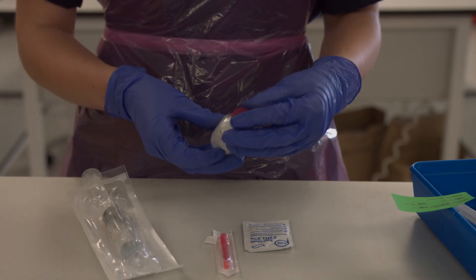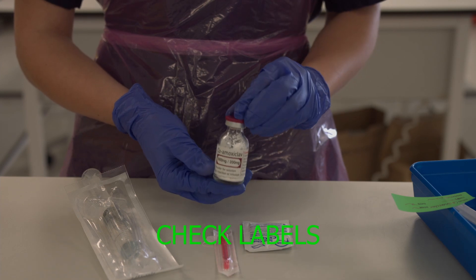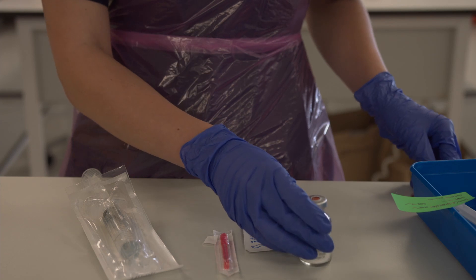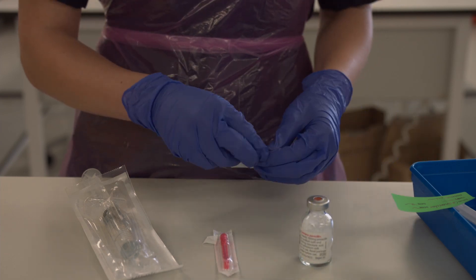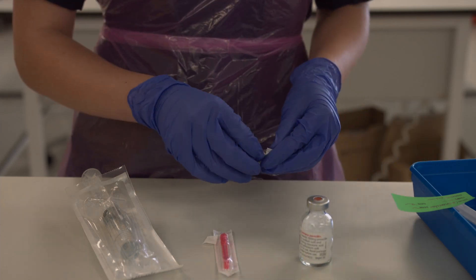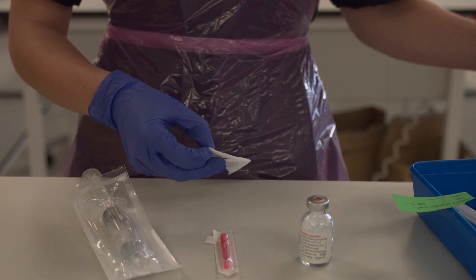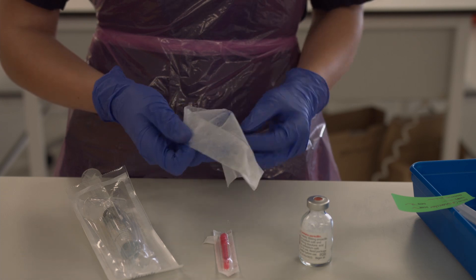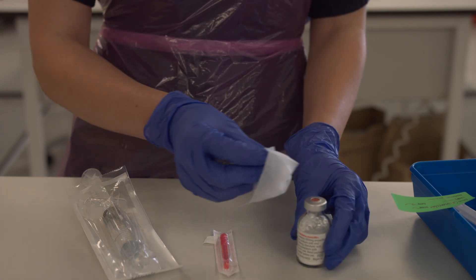Next check the label of your Carmoxiclav bottle to make sure that it is in date and that it is definitely Carmoxiclav. Remove the cap and open up your wipe ready to clean the rubber part at the top of the bottle. You need to open your wipe out fully and clean for 20 seconds before letting it dry for 30 seconds.